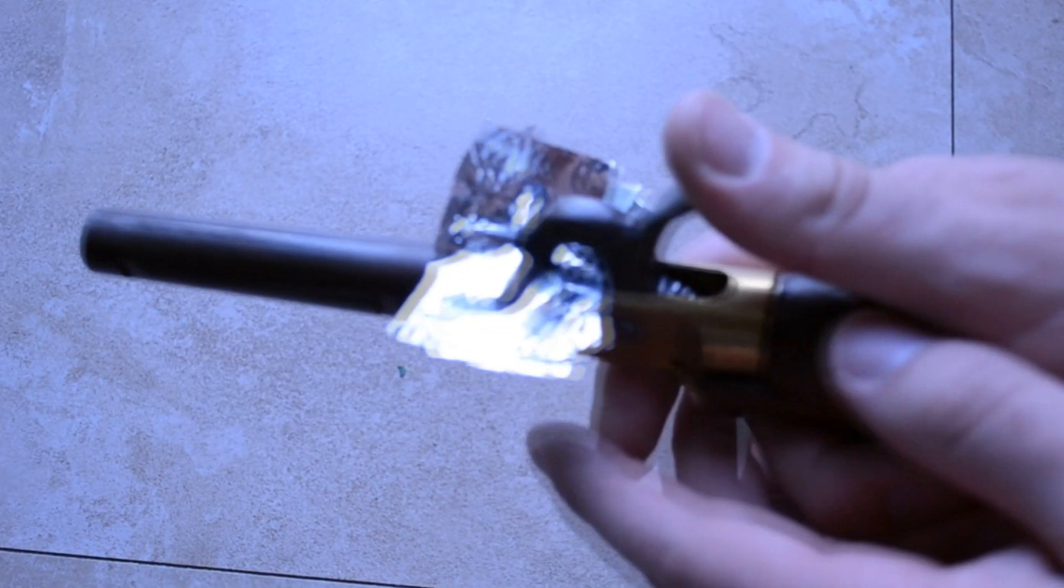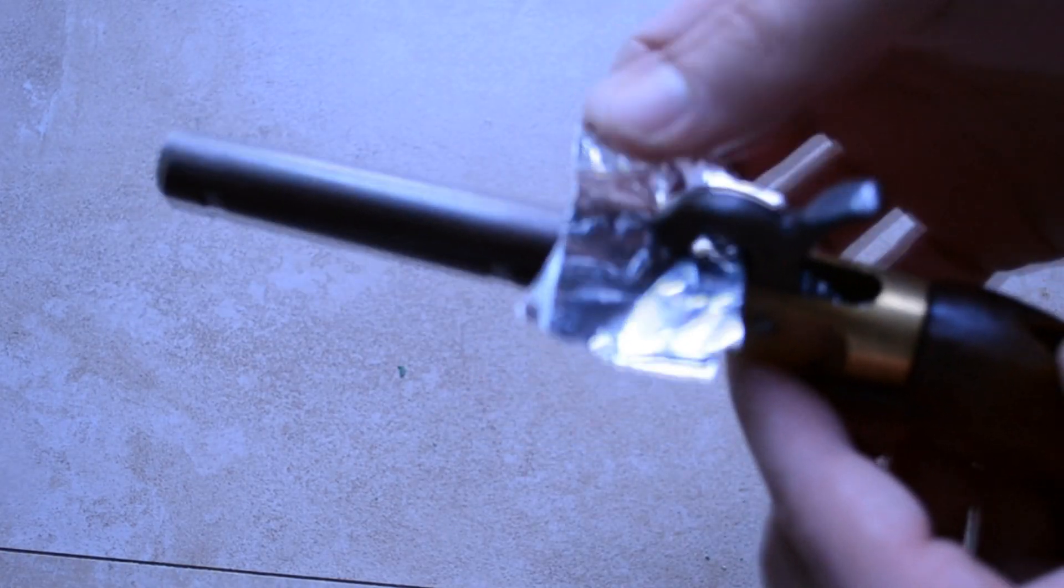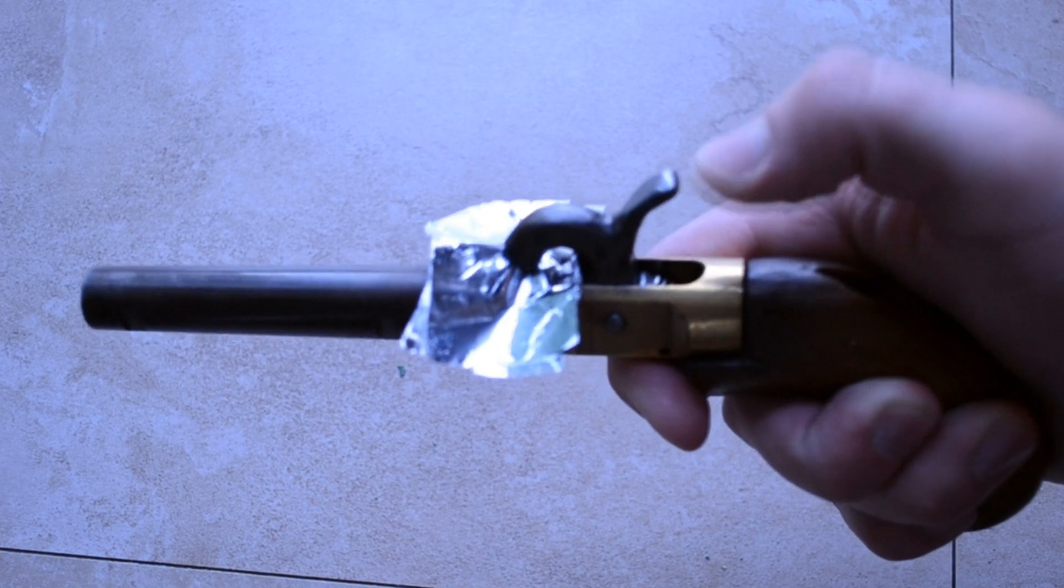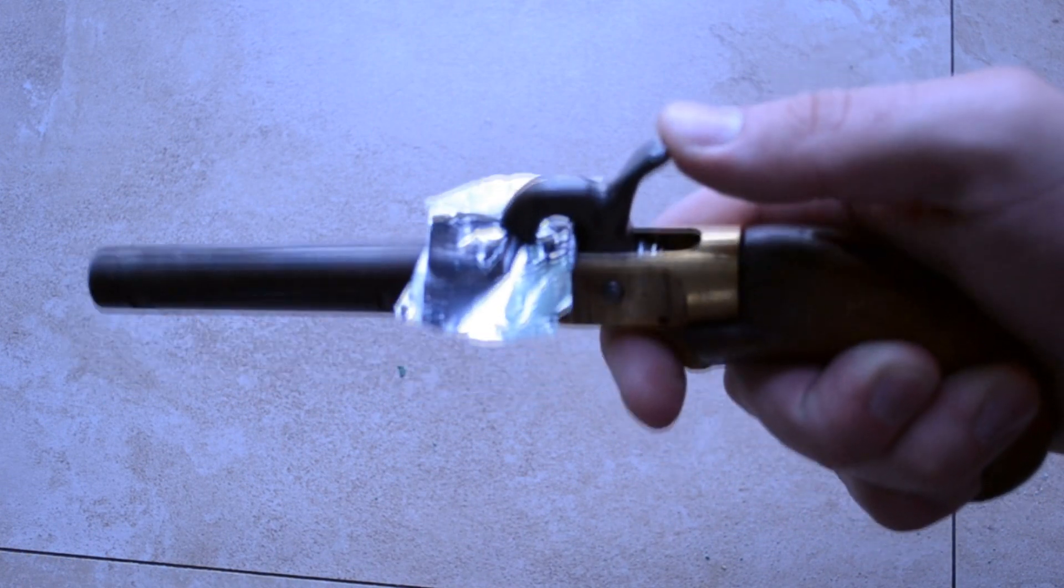With either a percussion pistol or pencil eraser, mold the three sheets of tinfoil over the nipple of the pistol or the blunt end of the pencil, just so you make an indentation in the foil. Use the hammer of the pistol to help mold the foil over the nipple.